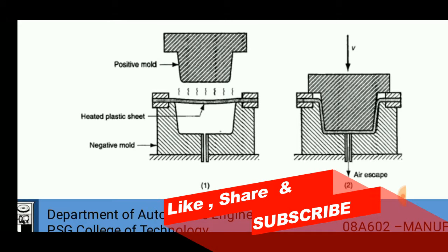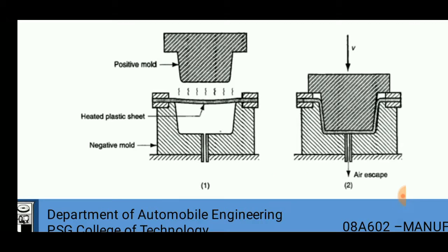It is one of the thermoforming processes used for the manufacture of different parts according to our design. It consists of two parts: a positive mold and a negative mold. The negative mold contains a port that can be used to escape the air trapped inside this cavity.